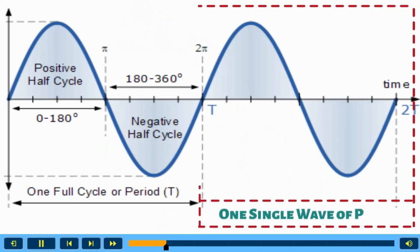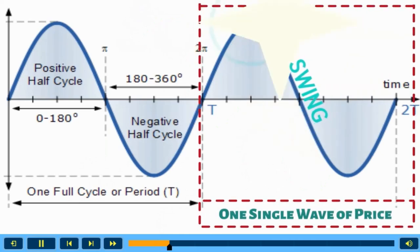If we look at one single wave of price, also known as a swing, it is made of two turning points.